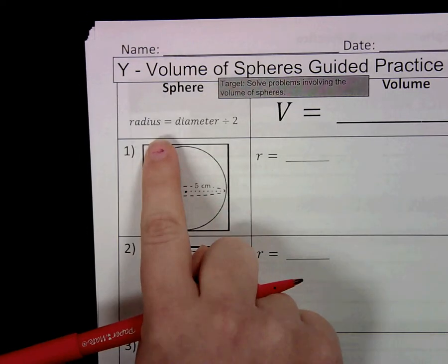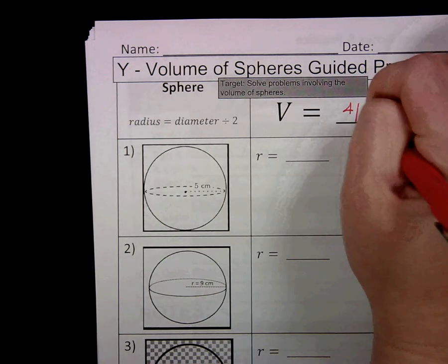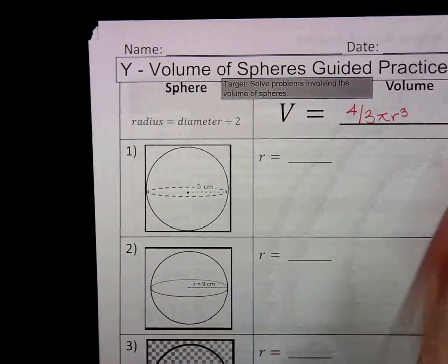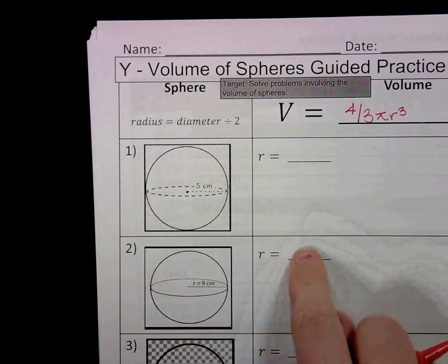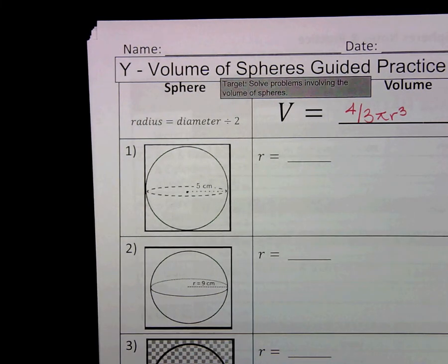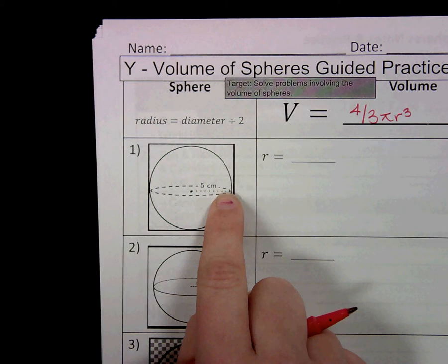So we've got our guided practice. We're going to write our formula at the top of the page. And before you get started, I want you to write your radius down for every single problem. Remember, the radius is only halfway across from the center to the outside of the circle.